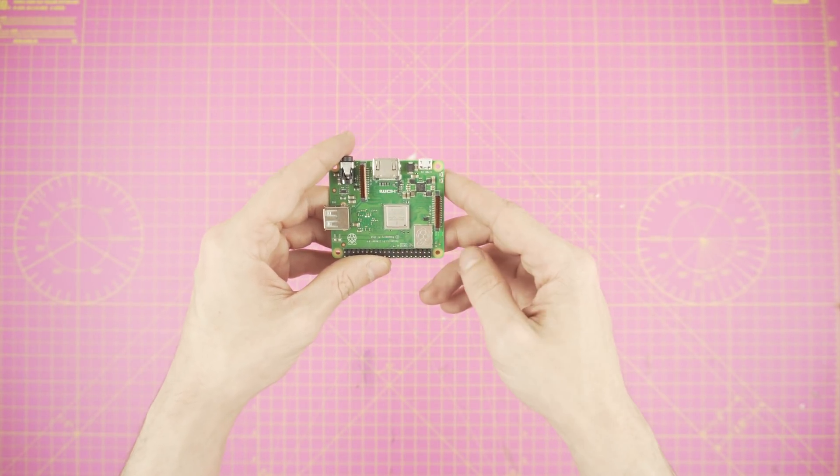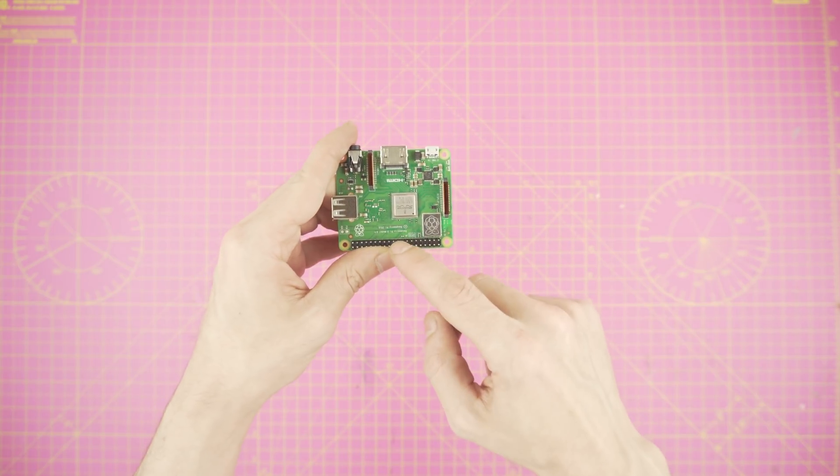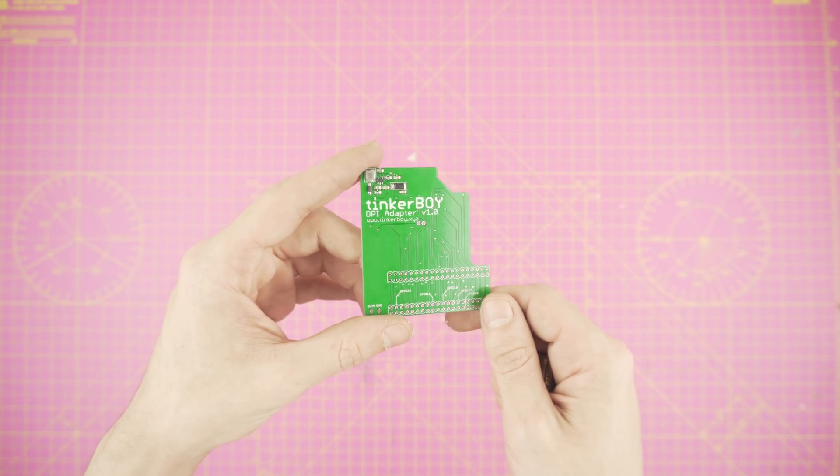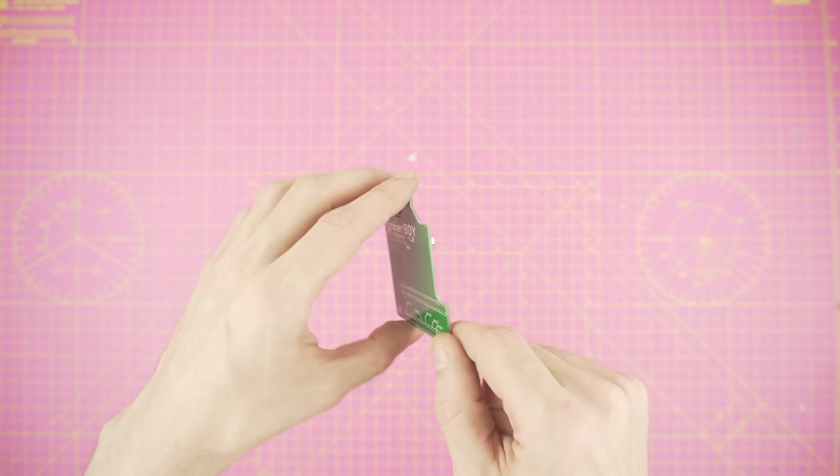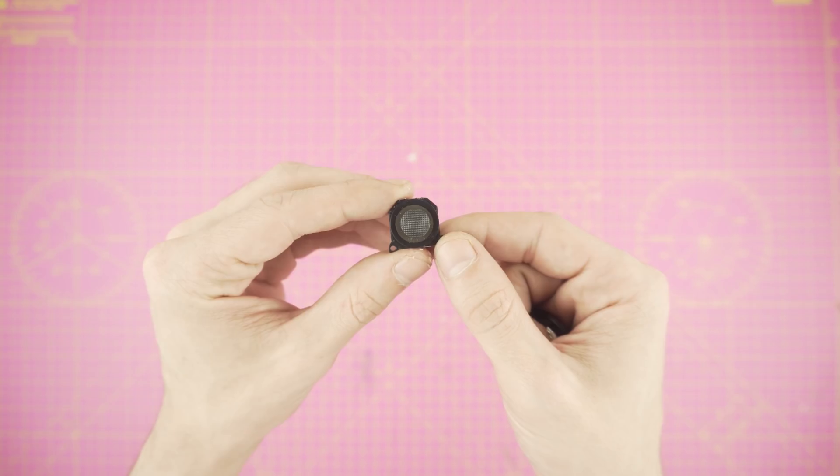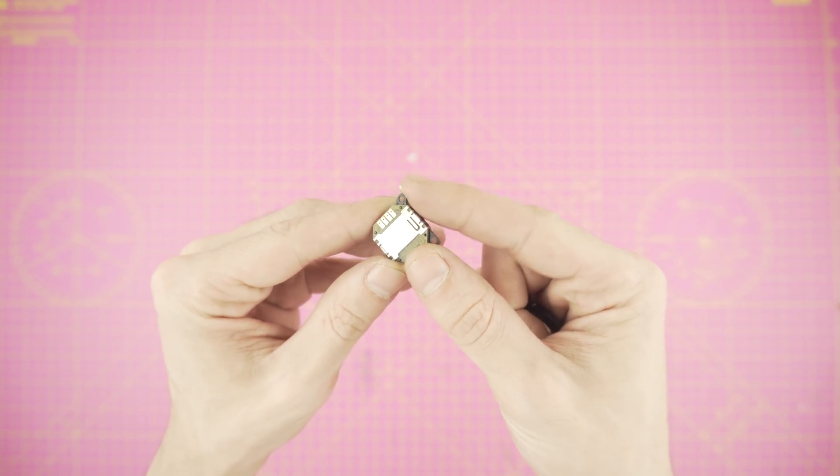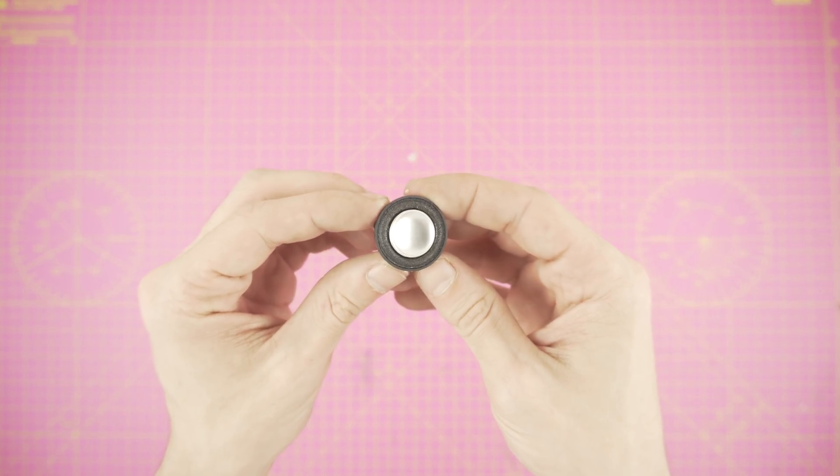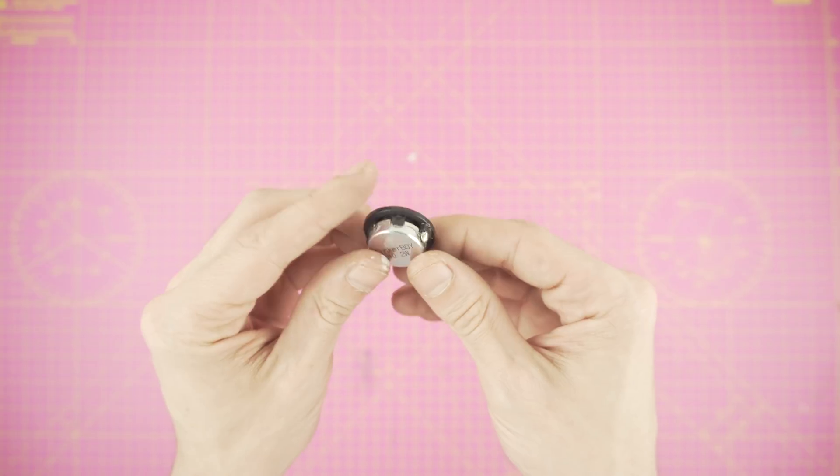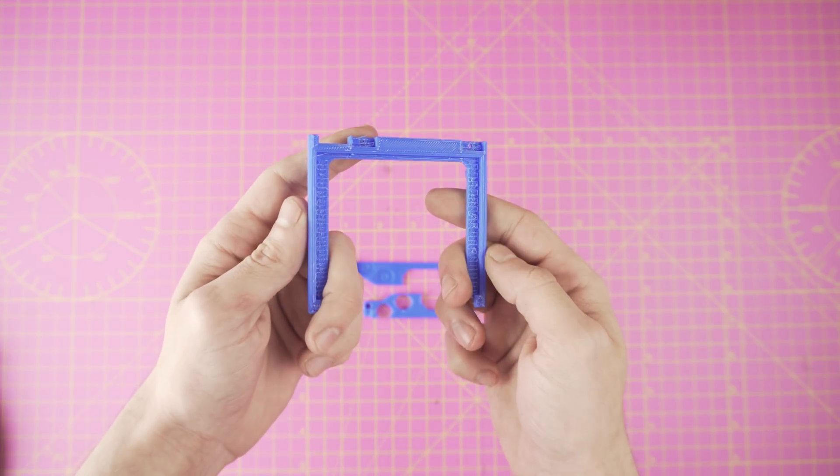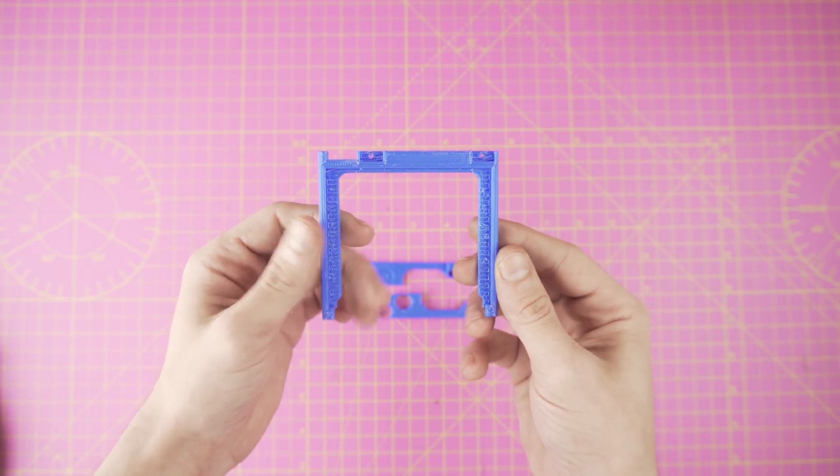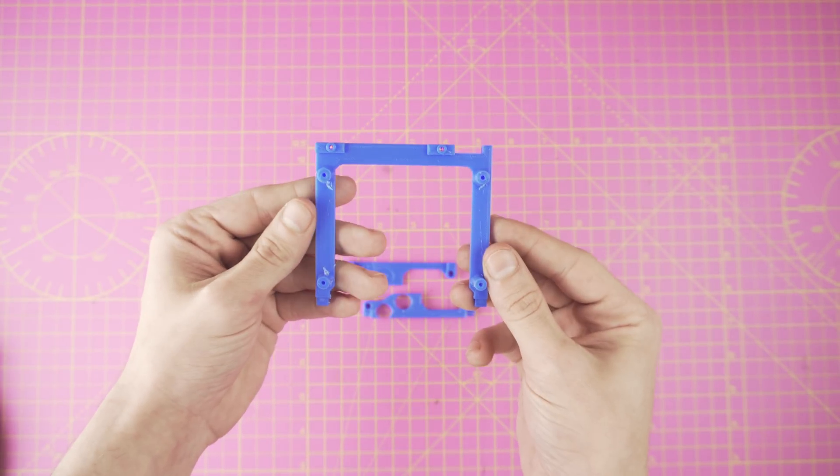Some of the main parts are the Pi 3 A Plus, our DPI adapter, a PSP 1000 joystick, and a 4 ohm 2 watt speaker by Tinkerboy. Also we will need a set of 3D printed brackets. Links to the majority of the parts will be in the description.